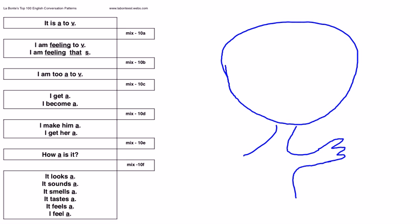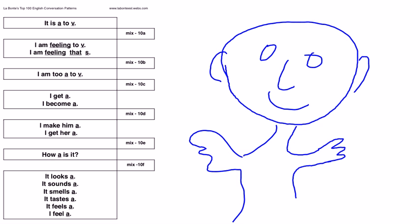And the funnest part I find in teaching these patterns is the bottom set here. What I do for the students is I draw a simple picture on the board. And, what I do is, these five senses that you have here, she looks beautiful, anything you hear, it sounds, anything you smell, it smells, the fourth one, it tastes, it feels, and I feel.